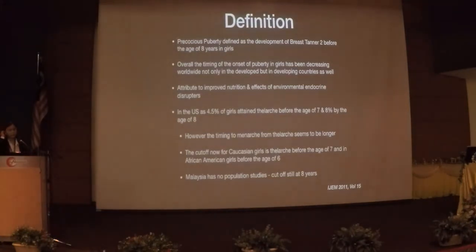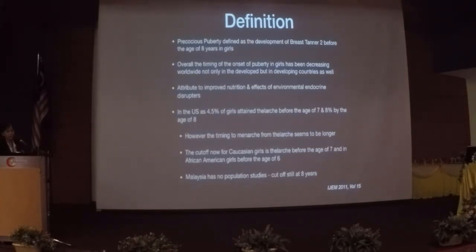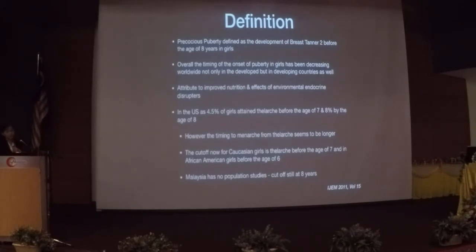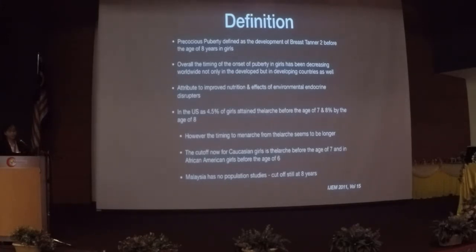Precocious puberty is defined as breast Tanner stage 2 before the age of 8. However, there are reports of girls developing breasts earlier, attributed to improved nutrition and environmental endocrine disruptors. In the US, about 4.5% of girls attained telarchy before age 7 and 8% by age 8, though their menses still occur at a similar age — giving a prolonged breast development before menarche. African-American girls tend to have earlier puberty than Caucasians. In Malaysia, there are no population studies, so the cut-off remains age 8.